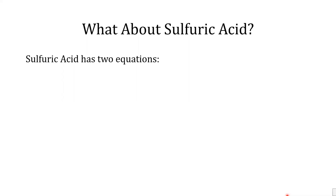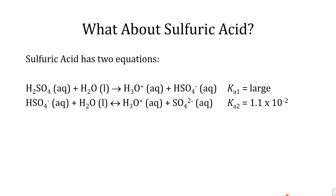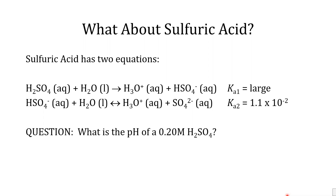With respect to the strong diprotic acid H2SO4 or sulfuric acid, it undergoes two successive ionizations. The first ionization is when H2SO4 in liquid water forms H3O+ and HSO4- ions, with Ka1 being very large. The second ionization is when HSO4- in liquid water produces H3O+ and SO42- ions, with Ka2 equaling 1.1 times 10 to the minus 2. The question is: what is the pH of a 0.20 molar H2SO4 solution?